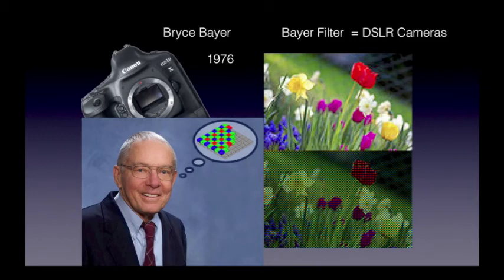Here is Bruce Bayer, to whom we owe a great debt of gratitude, who in 1976 figured out the Bayer filter — red, green, and blue sensors that allow the digital camera to record all the colors of the spectrum using a grid of RGB sensors. He also figured out the software needed to interpolate the image from that grid of RGB sensors.